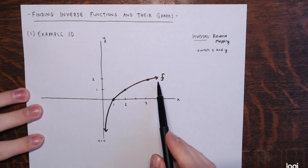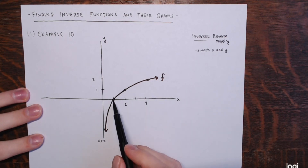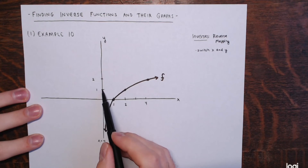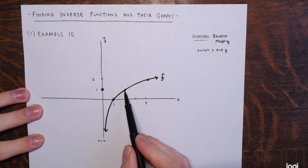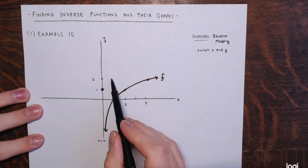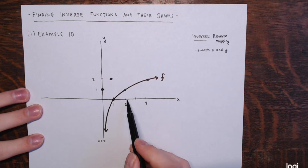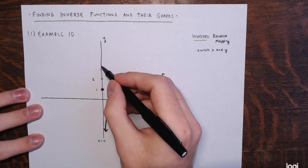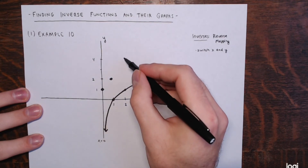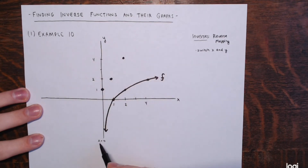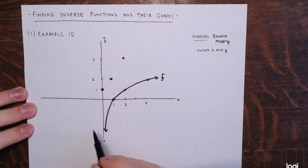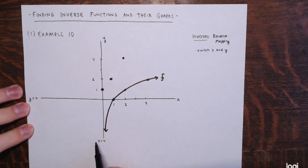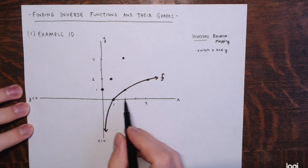On the graph of f inverse: f has (1, 0), so f inverse has (0, 1). f has (2, 1), so f inverse has (1, 2). f has (4, 2), so f inverse has (2, 4). And instead of x equals 0 being a vertical asymptote, y equals 0 — the x-axis — will be a horizontal asymptote.